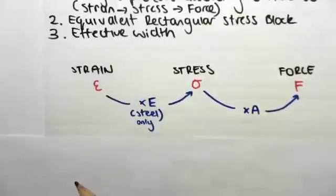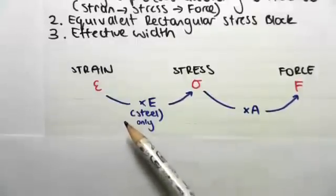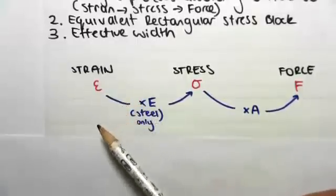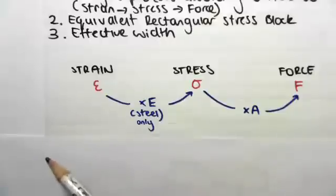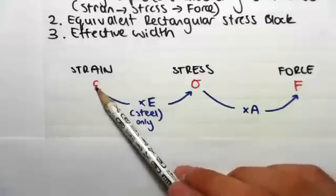A good thing about the strain as well is that because the steel and concrete behave compositely, they're going to reduce and increase in length by the same amount. So their strains are going to be the same. They deform the same because they're bound together. So the code is going to give us maximum values of strain.